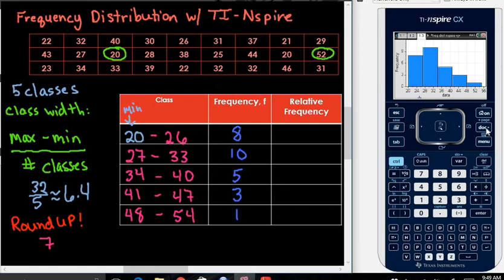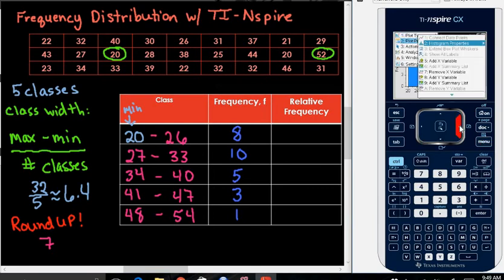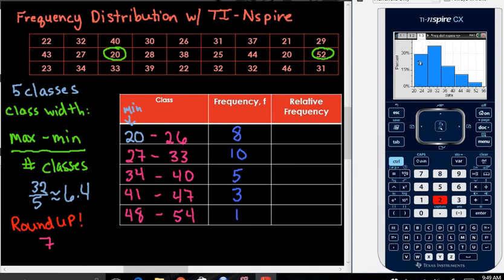For the relative frequency, we can use the calculator to help us find that as well. If we hit the menu button again, go to plot properties and histogram properties, this time I want to choose option 1. So option 2, the histogram properties, and then we want to choose option 1, and we want to do it as a percent. And if you notice, it now changes this to a percent, which is now a relative frequency histogram.